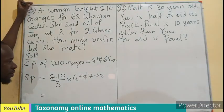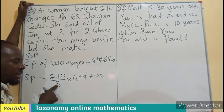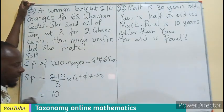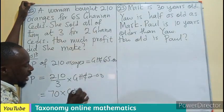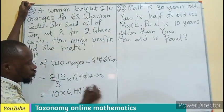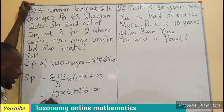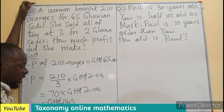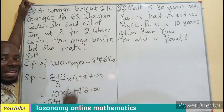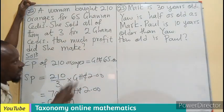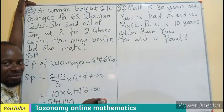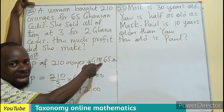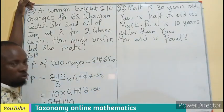Let's perform the arithmetic. Three is a factor of 21, so it goes seven times, with a zero making it 210, giving 70 groups. Then we multiply by two Ghana cedis: two times 70 is 140. So 140 Ghana cedis is the selling price of all the oranges. The cost price was 65 Ghana cedis — there is an increase, so there is a profit.